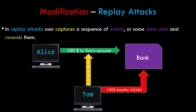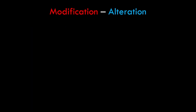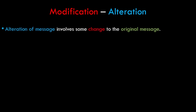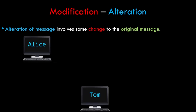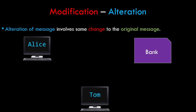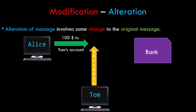Now let's look at alteration, the other type of modification attack. In alteration, it involves some change to the original message. Alice wants to transfer $100 to Tom, so she initiates a transaction. Before this transaction reaches the bank, Tom intercepts it and alters the amount to $200. When the transaction reaches the bank, the bank transfers $200 to Tom, thinking that Alice wanted to transfer $200. This is an example of an alteration attack.